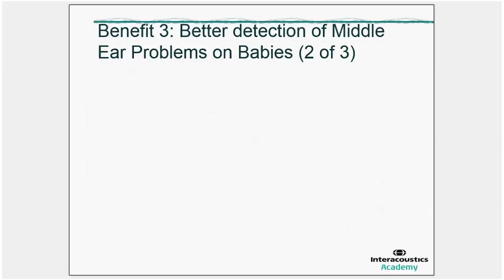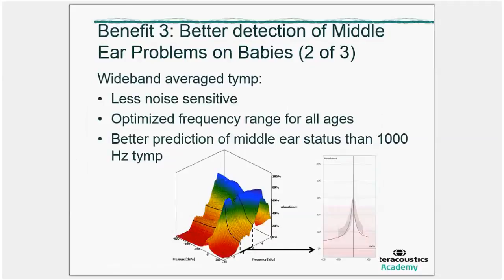The second benefit on babies is the use of the wideband averaged tympanogram. When babies are tested with 1000 Hz, very often the curve is difficult to make an interpretation of, particularly if the baby is not fully cooperative. With an averaged measurement, there is less noise. And the frequency range of this measurement is optimized to differentiate best for babies. And it is reported in literature that the predictive value of the wideband averaged tympanogram is much higher than for 1000 Hz tympanograms.